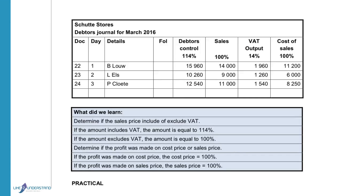In the debtors control column, we indicate the total amount that debtors owe, which includes VAT: 15,960. The sales and output VAT must equal the debtors control. Sales is 100% of 114%, giving 14,000. To calculate sales: 100 divided by 114 times 15,960. To calculate VAT: 14 divided by 114 times 15,960 gives 1,960. The cost of sales is calculated on the sales price excluding VAT, which we determined as 11,200.